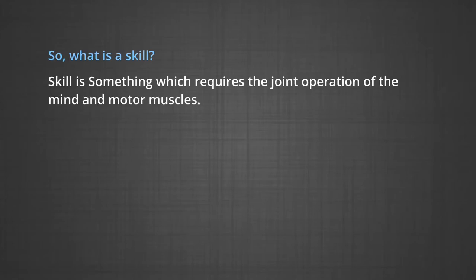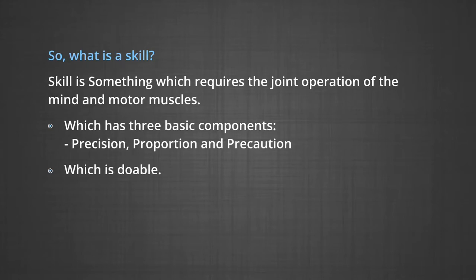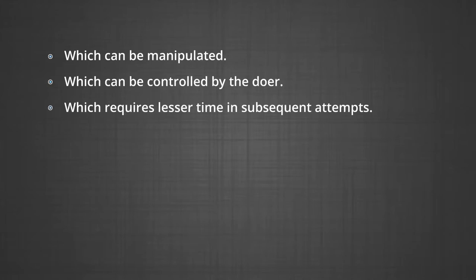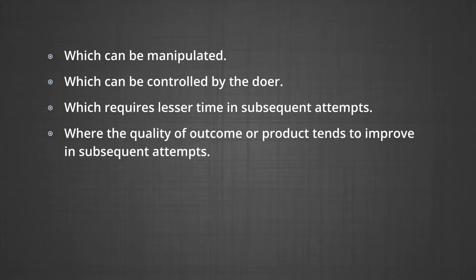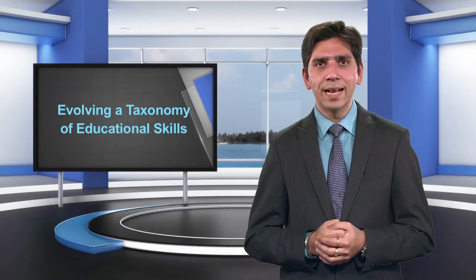So what is a skill? A skill is something which requires the joint operation of the mind and motor muscles, and has three basic components: precision, proportion and precaution. Whatever is doable, which can be imitated, manipulated, controlled by the doer, which requires lesser time in subsequent attempts, where the quality of outcome or product tends to improve in subsequent attempts, and which once learnt is never forgotten.